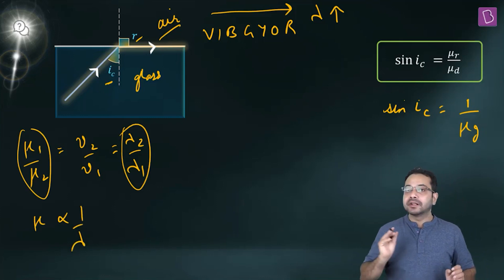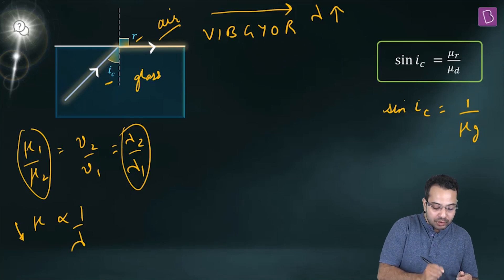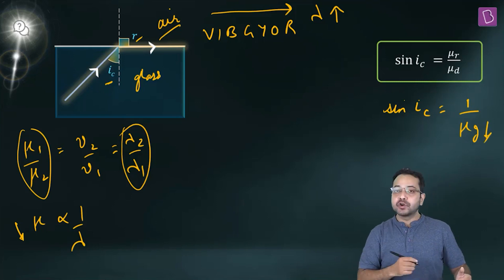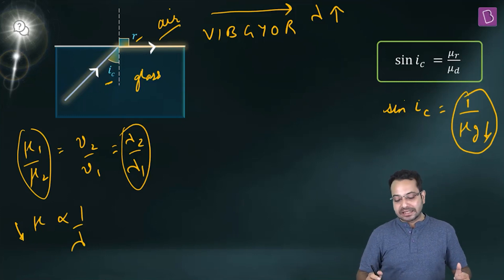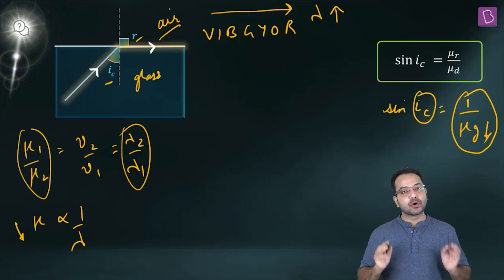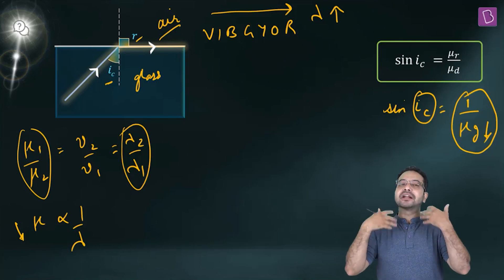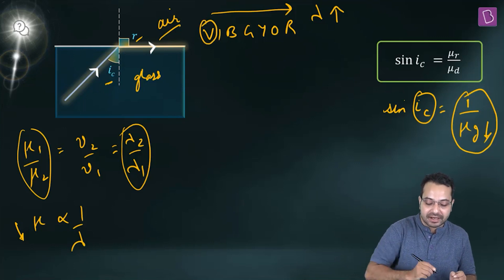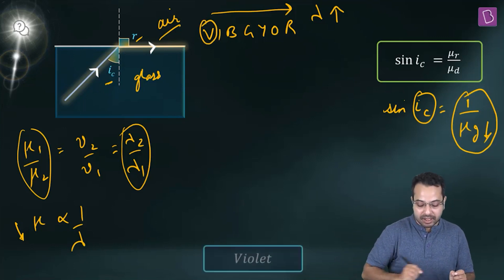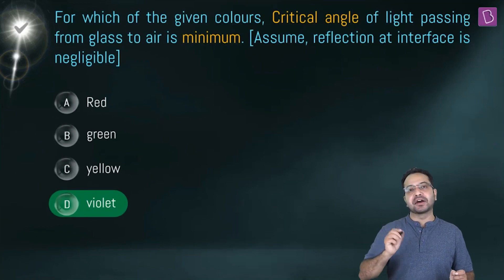Going from violet to red, the critical angle is increasing. Hence the minimum critical angle occurs at violet. So the answer is violet — option D is the correct option.